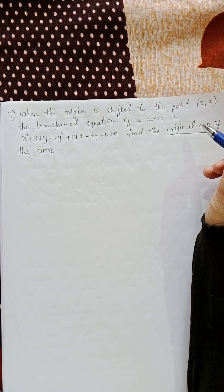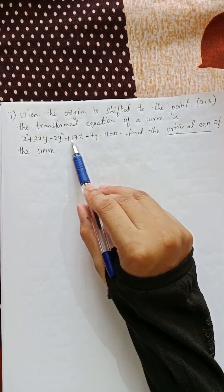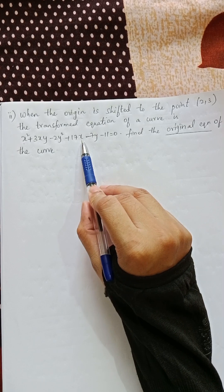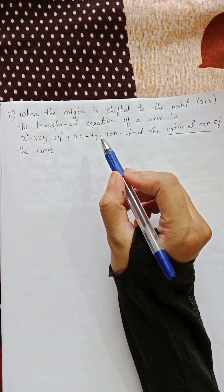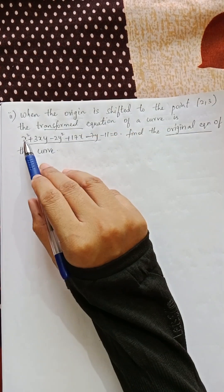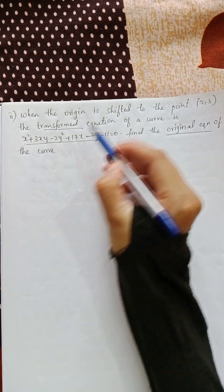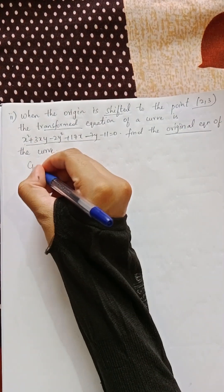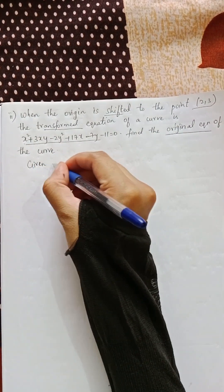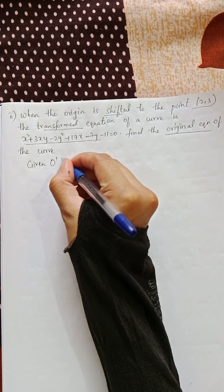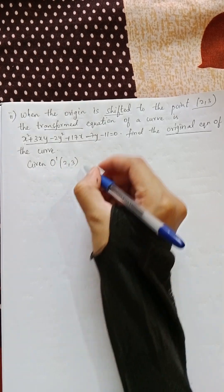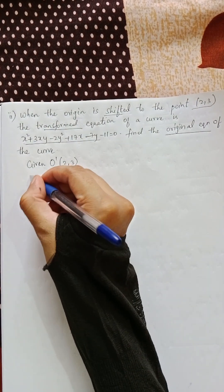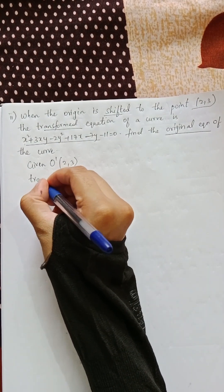In the question it will always be in small x and small y form only. You have to understand whether it is a transformed or original equation. So this equation given is a transformed equation — this is capital X and capital Y. The origin is shifted, so h, k is given as O' = (2, 3), and the transformed equation is given.